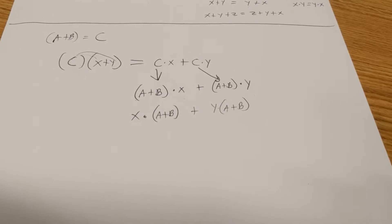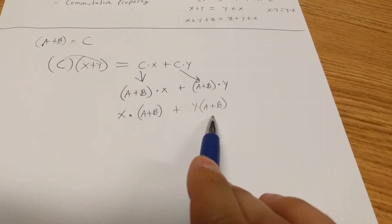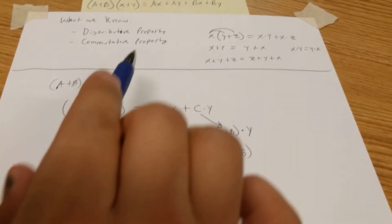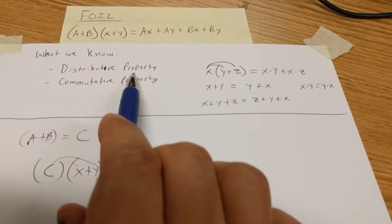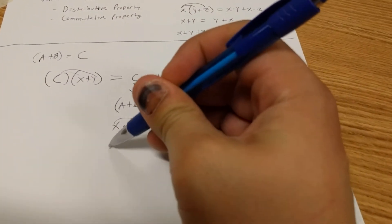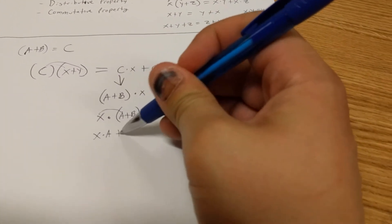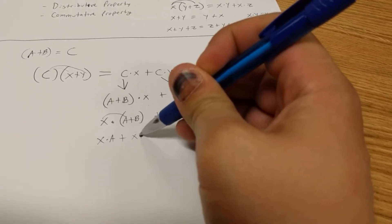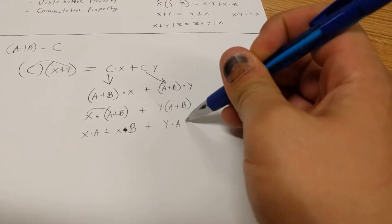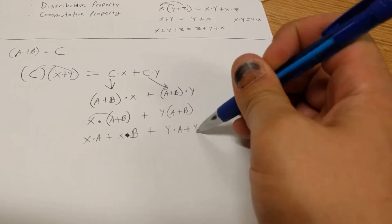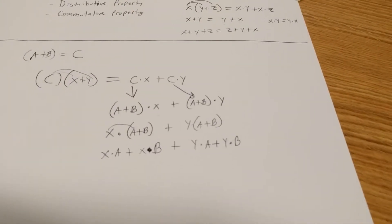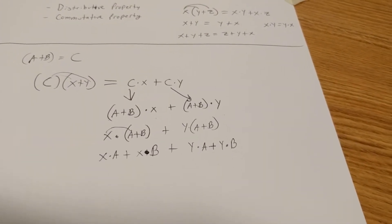We're going to use the commutative property with a plus b times x, and rewrite it as x times a plus b plus y times a plus b. This piece down here should look remarkably similar to our piece up here, which is use of our distributive property. So let's use it one more time.